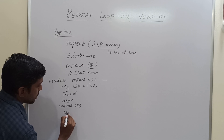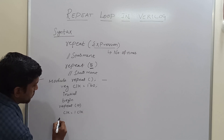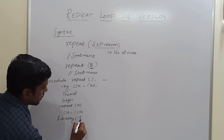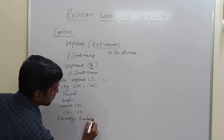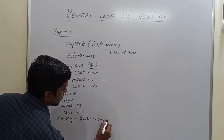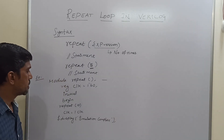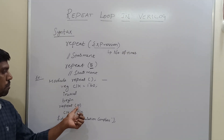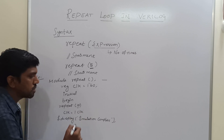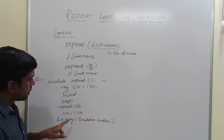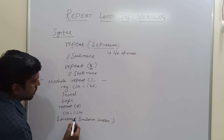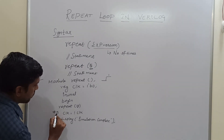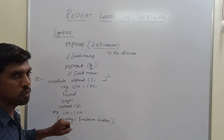Then clock equal to not of clock. Then display the result — display simulation. Here this loop will repeat the block of statements some defined number of times; the defined time is 10, so 10 times it repeats the block. Clock equal to not of clock — so this value goes to 1. After 5 nanoseconds the clock value changes — this value goes to not of clock.